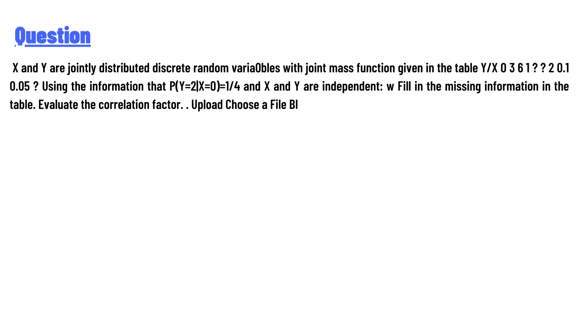The table shows Y over X with values 0, 3, 6, 1, and some missing values marked as question marks. Row 2 shows 0.1, 0.05, and a question mark. Using the information that P(Y=2|X=0) = 1/4 and X and Y are independent, we will fill in the missing information in the table, evaluate the correlation factor, and upload the solution.